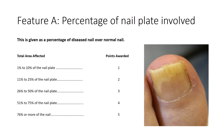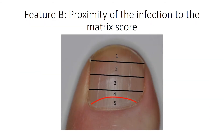Feature A is the percentage of the nail plate involved. With the patient's nail in front of you, you estimate what total area of that nail is affected. Looking at the toenail shown here — drawing a rough outline of the diseased area — this is roughly about 30% of the total nail plate area. Looking at the scoring chart, 30% sits between 26 and 50%, which scores three. So Feature A equals three.